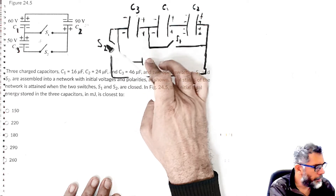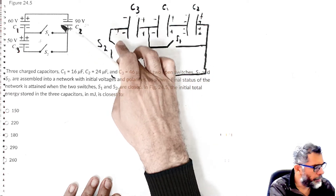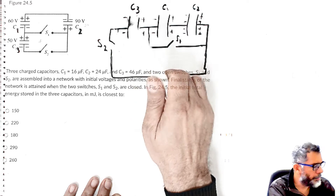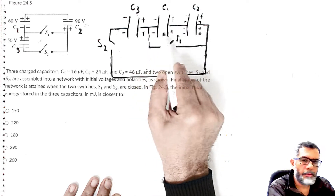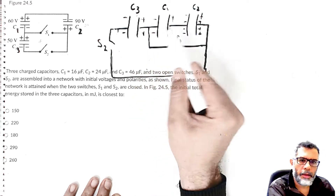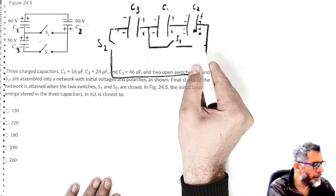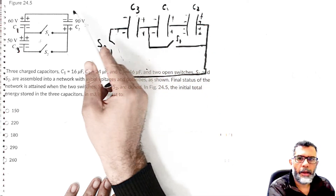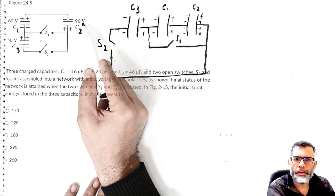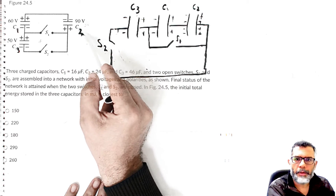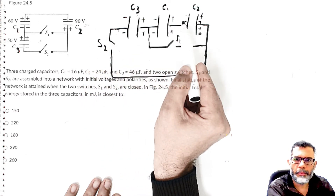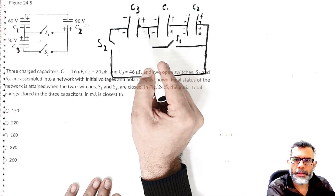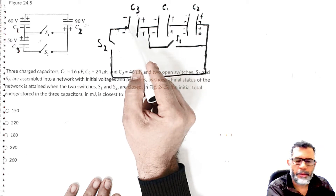When you connect three capacitors serially, in the most general case their potential differences are not going to be the same. The potential differences are given: for C2 it has 90 volts, C1 has 60 volts, and C3 has 50 volts.